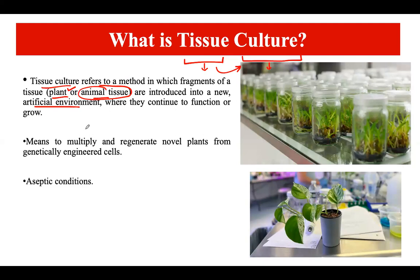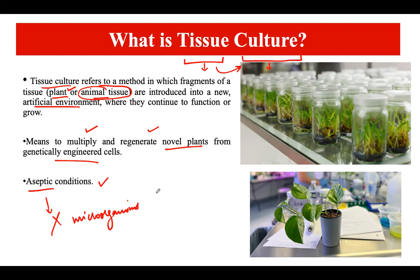Plant tissue culture is used to multiply and regenerate novel plants from genetically engineered cells, or from any other plant cells — it is not required for cells to be genetically engineered. This technique critically requires aseptic conditions, meaning a complete absence of microorganisms. We must ensure there is no microbial contamination in the culture, because any contamination can halt the growth process and cause the tissue culture to fail.